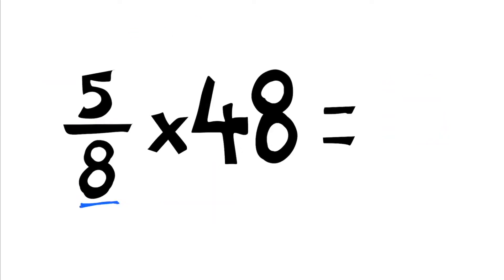Here we've got five-eighths of 48. Well, how many eights in 48? There are six. So one-eighth is equal to six. We multiply the six by the numerator: six times five, which is 30. Five-eighths of 48 is 30.